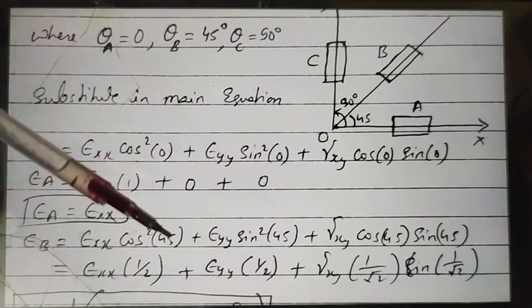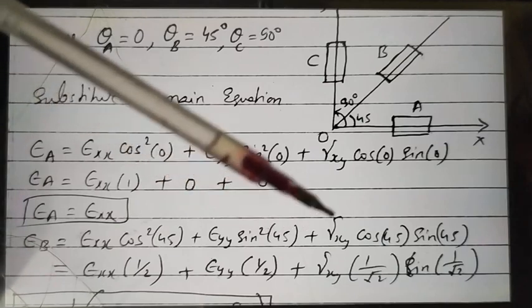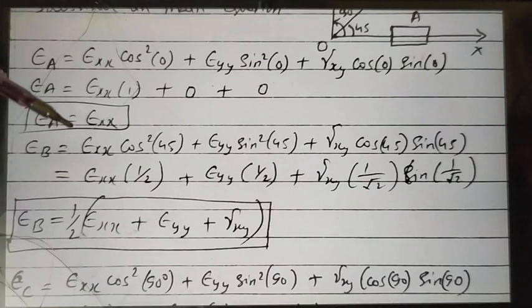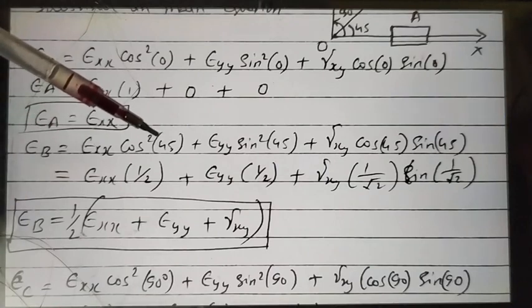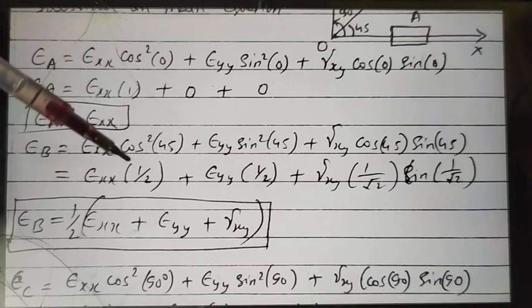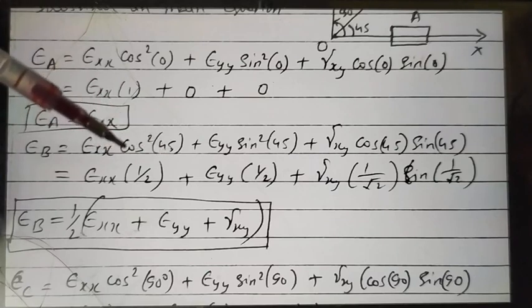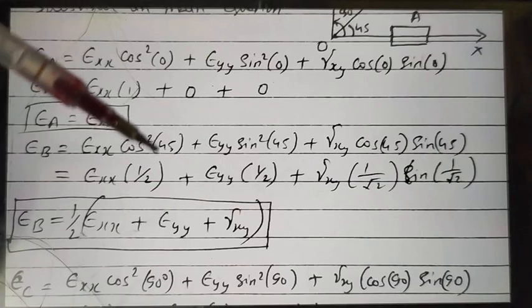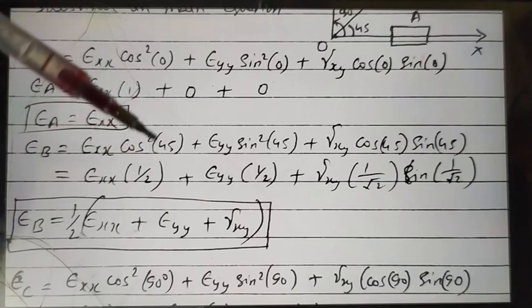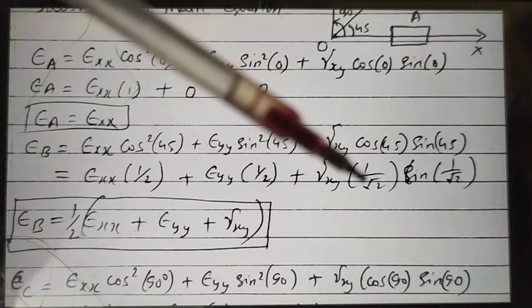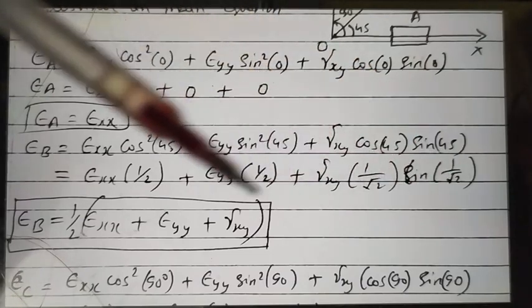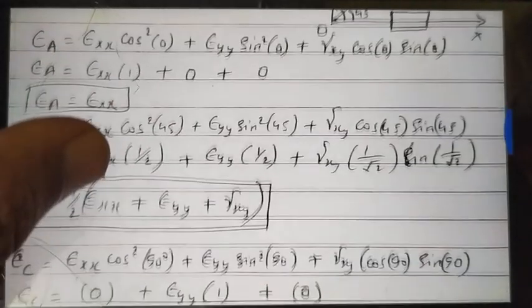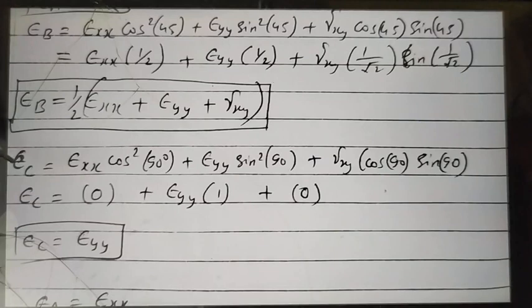For theta_b equal to 45 degrees: cos(45) equals 1/√2, so cos²(45) equals 1/2; sin²(45) equals 1/2; sin(45)cos(45) equals 1/2. Simplifying the equation gives: epsilon_b equals (epsilon_xx + epsilon_yy + gamma_xy) / 2.